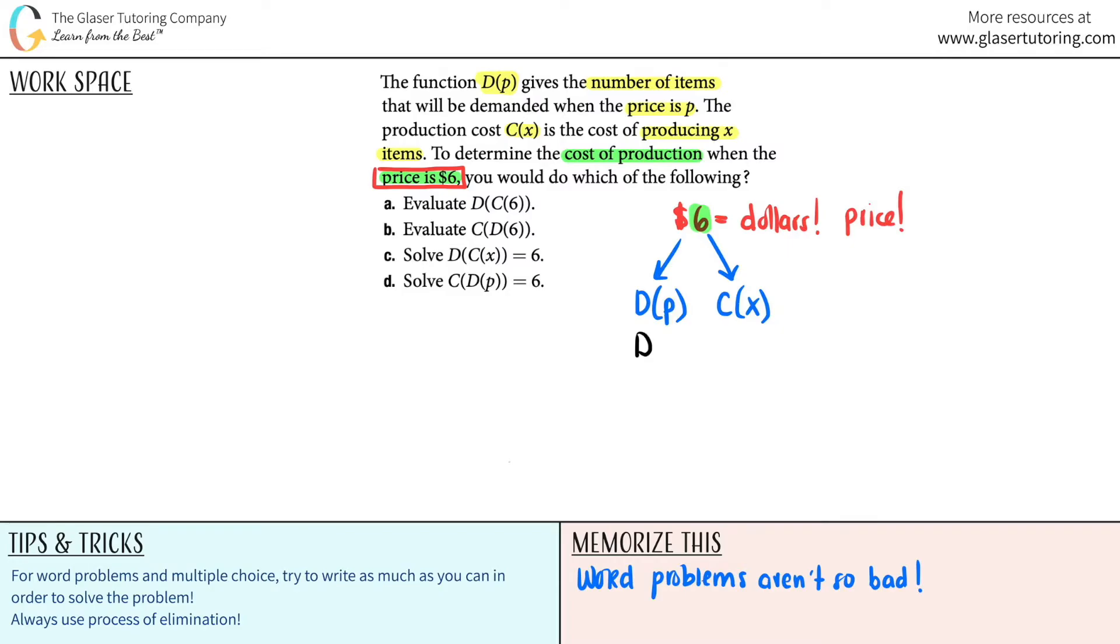Or are we going to plug in this 6 for the c function? Basically saying, would I plug in the 6 for a p, so this would be like d of 6, or would I plug in this 6 for the c function, in which the 6 would equal x?